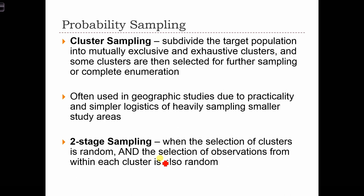In two-stage sampling, the selection of clusters is random. Once we divide the population up into clusters, we randomly select some clusters to investigate, and then within each cluster, we randomly select observations to include in our sample.